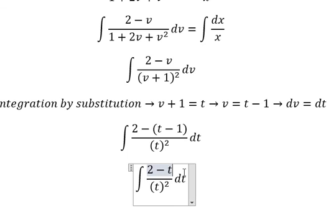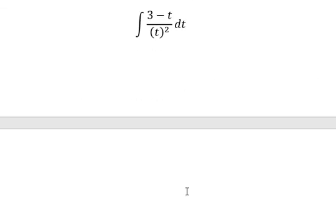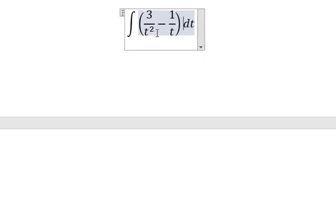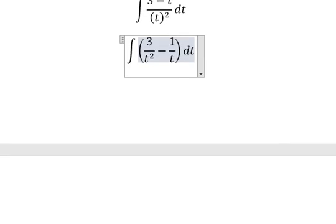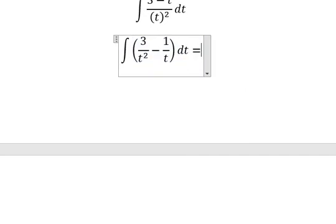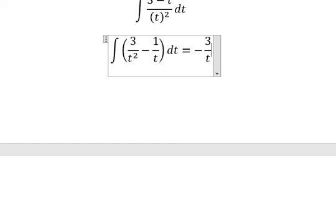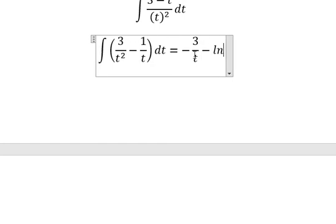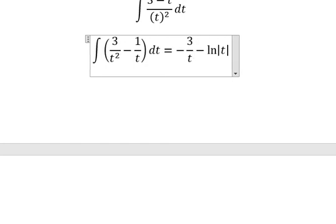So this one you got negative t plus 1. 2 plus 1 you got about 3. And this one you got about 3 over t squared minus 1 over t. So you will get negative 3 over t minus ln of the absolute value of t plus C.